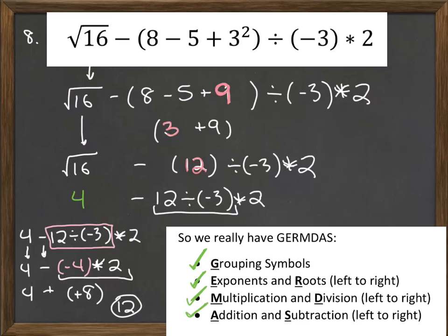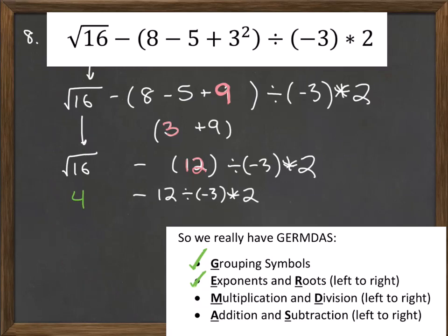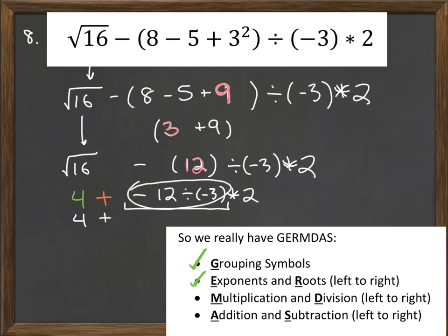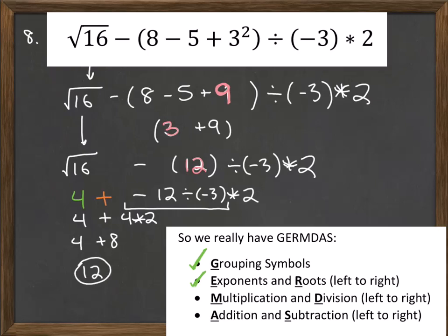There's also a different way to do the same problem. If you think of it as negative 12 divided by negative 3, you need to add a plus sign artificially — so 4 minus 12 becomes 4 plus negative 12. Then negative 12 divided by negative 3 is positive 4. Now 4 plus 4 times 2: multiply first, 4 times 2 is 8, then 4 plus 8 is 12. This method is equally valid, but the transformation you must make is changing the subtraction sign to plus and a negative sign.